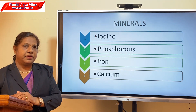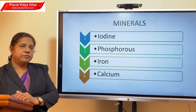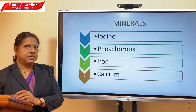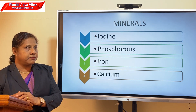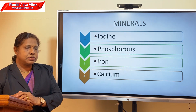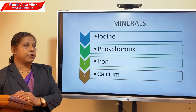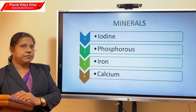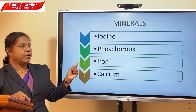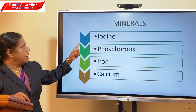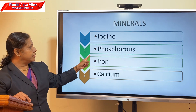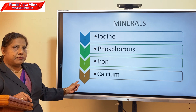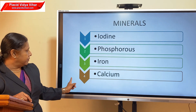Now we can go on to minerals. These minerals are also needed in very small quantity, like vitamins. They are also needed for the maintenance and proper growth of the body. The main minerals that our body needs are iron, phosphorus, and calcium.